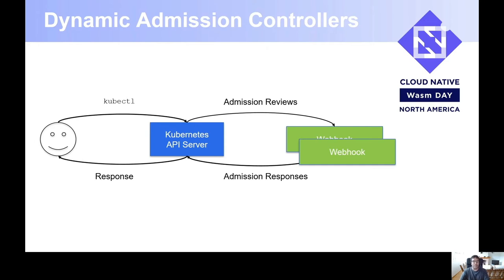By using dynamic admission controllers, we are able to register webhooks inside the Kubernetes API server. There are different ways — mutating and validating. And we can say on each of these webhook configurations which kind of resources and API version groups we are interested in. When we register these webhooks, the Kubernetes API server, when it gets a request from a client — in this case the kubectl CLI tool, but it could be any HTTP request — it will look for all the webhooks registered against this resource and operation. It will produce an admission review for each one of them. Every webhook has to answer to the Kubernetes API server, and then the API server will collect all these responses and produce the final response to the client.